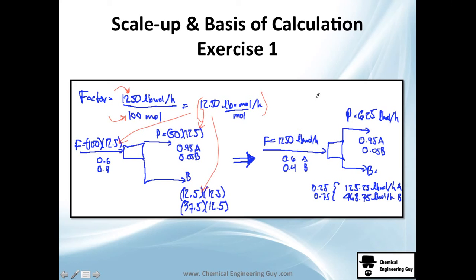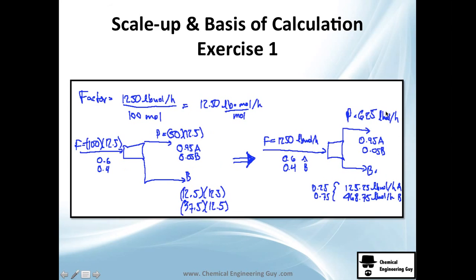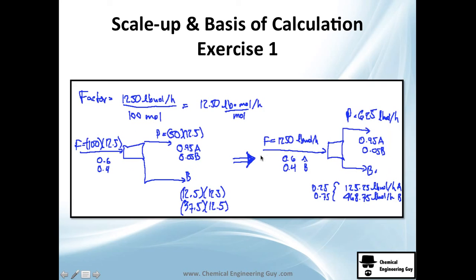We have this factor, we just need to multiply each flow and this will be the answer. Look how this is different from this one here: you have 50 here, now you have 625. I want you to see that the compositions here didn't actually change. Look: 0.6, 0.4 stays 0.6, 0.4; 0.95, 0.05 stays 0.95, 0.05; and these of course will also remain the same.